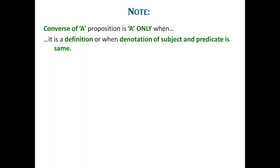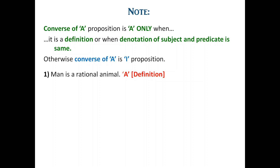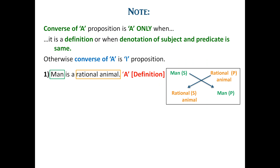Note that the converse of an A proposition remains A only when it is a definition or a denotative proposition, that is where the subject and predicate denote each other. Otherwise the converse of A is an I proposition. For example: 'Man is a rational animal' is a definition, so the converse of A will remain A. The subject 'man' and predicate 'rational animal' get interchanged in the conclusion. So the converse is 'rational animal is man'.